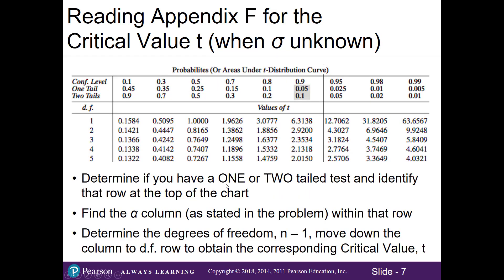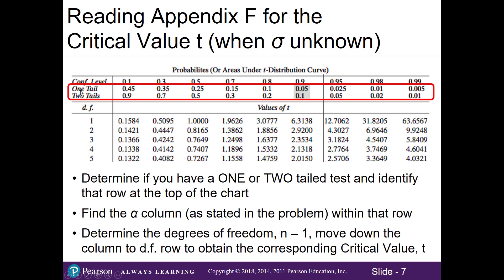To find a critical T value using Appendix F when we don't know the population standard deviation, first determine if it's one-tail or two-tail, then go across to find the alpha. Calculate degrees of freedom as n minus 1. For example, with a one-tailed test, alpha 0.01, and sample size 6 (degrees of freedom = 5), moving down to row 5 gives a critical T value of 3.3649.